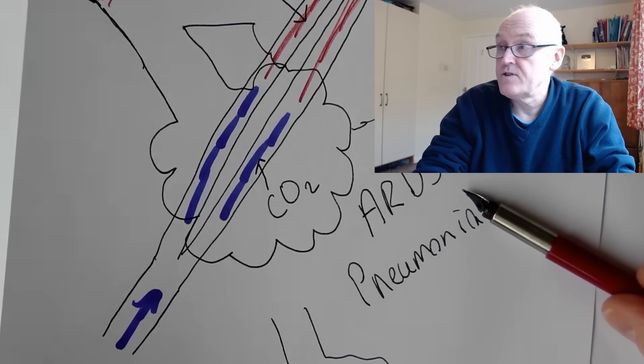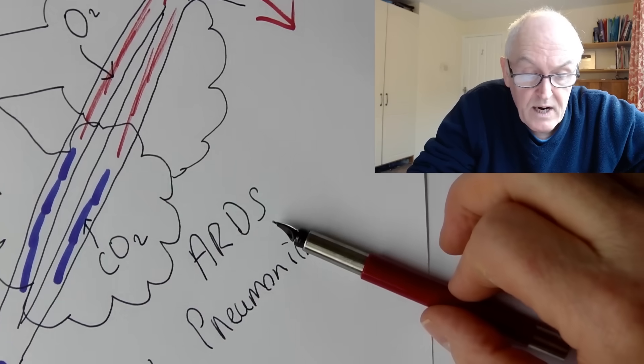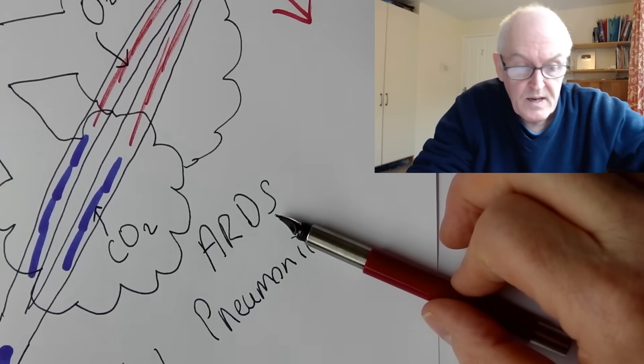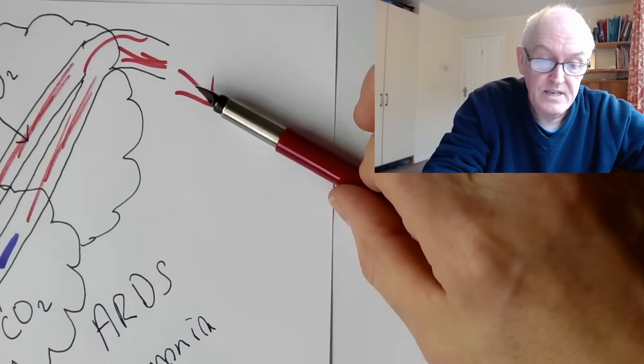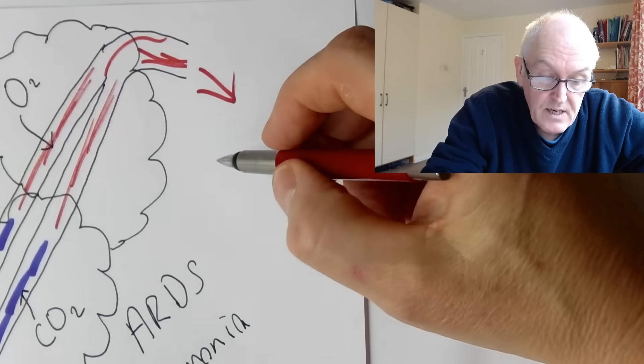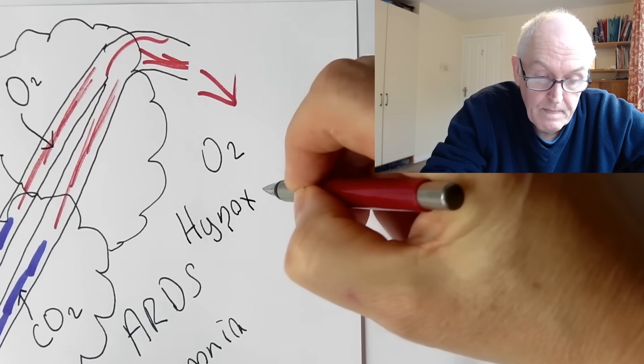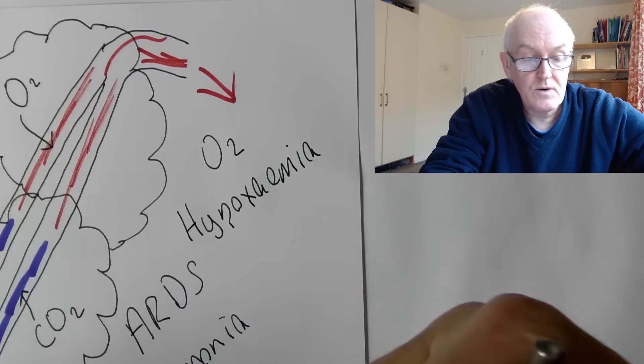ARDS, acute respiratory distress syndrome, is caused by inflammation in the lungs. Could be caused by a virus, could be caused by trauma, could be caused by inhaling toxins. But the bottom line is the same: the oxygen can't get through, so that means the oxygen saturations in the blood are going to go down. That is what we call hypoxemia. That's what we test for with this.